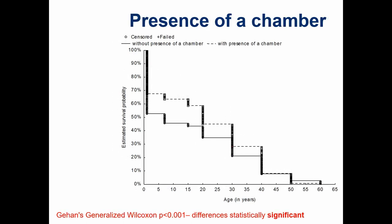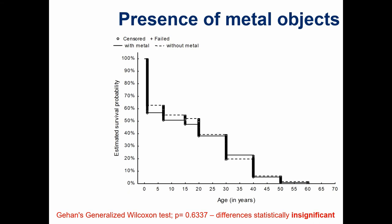According to the presence or lack of a chamber: the Gehan generalized Wilcoxon test confirms significant differences in estimated survival probability. With presence of a chamber, over 76% survived to the onset of maturation, but without a chamber, only 50% did — significantly less. However, there was a lack of statistically significant differences in estimated survival probability according to the presence or lack of metal objects. The occurrence of metal objects in a grave did not influence estimated survival probability.